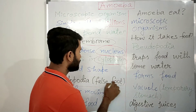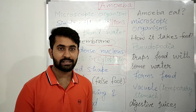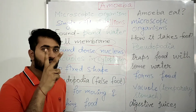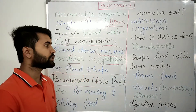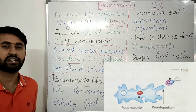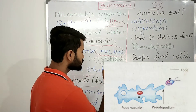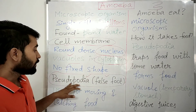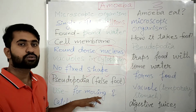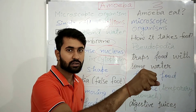How does the amoeba catch its food? Whenever amoeba senses that food is near, it forms finger-like projections called pseudopodia, or false foot. The amoeba uses pseudopodia for moving and catching food.